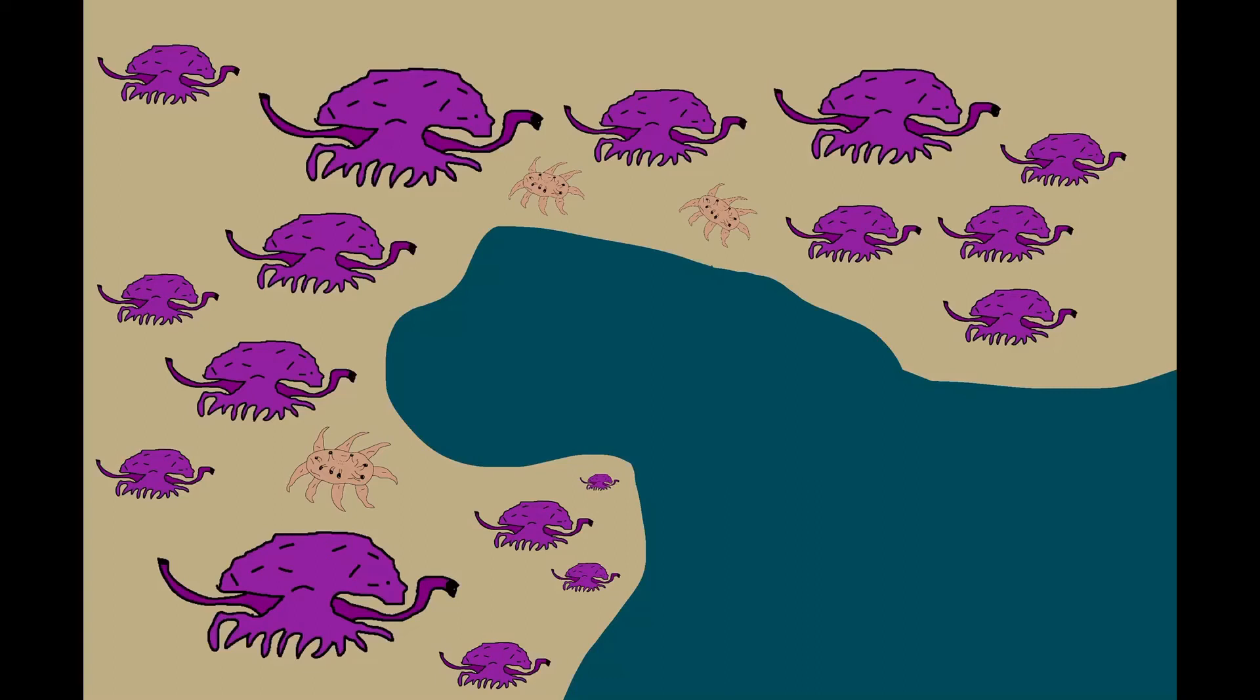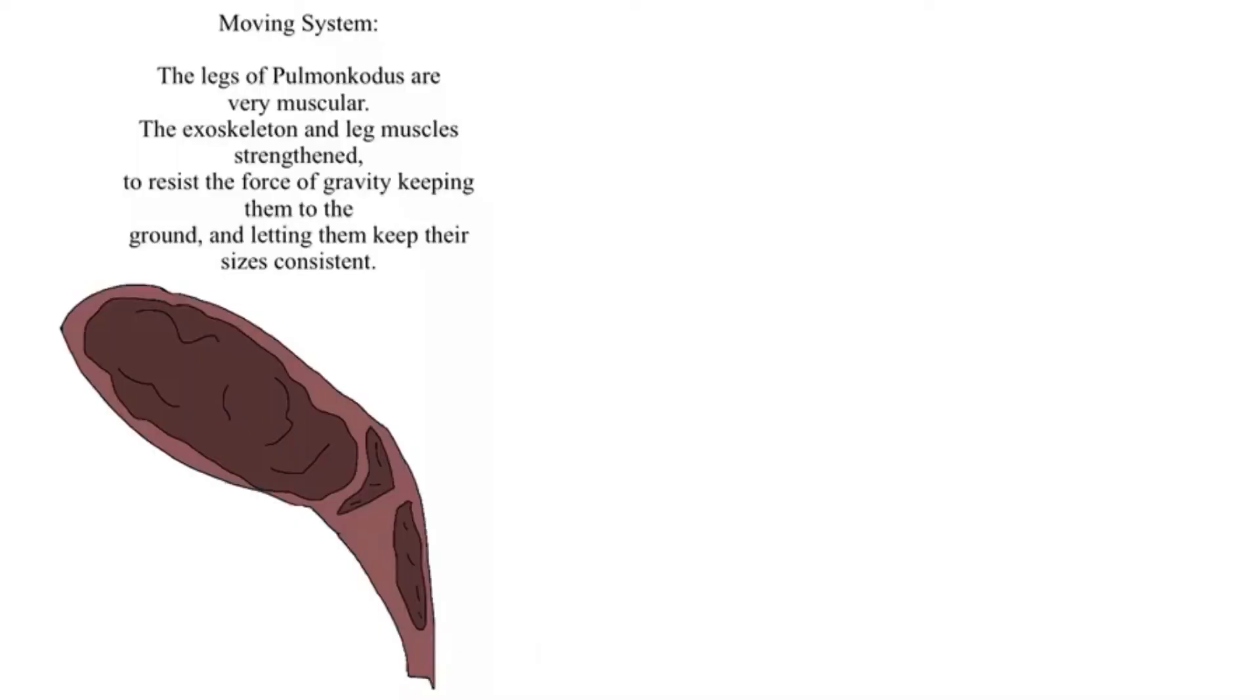The early forms might have a thicker waterproof skin and hardier exoskeleton as they get used to their terrestrial existence. Their legs might be strongly muscular and armored to efficiently support the body of these Iaquilopods out of the water.